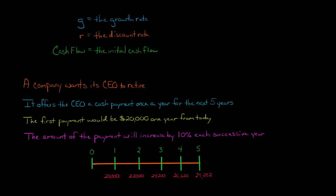So if we think about the stream of payments, one year from now, the CEO is going to receive $20,000, but then two years from now, it's going to receive $20,000 increased by 10%, which is $22,000. That's just $20,000 times 1.1. And then $22,000, when you increase that by 10%, the next year, you'll get $24,200. The fourth year, $26,620. And then the fifth year, $29,282.